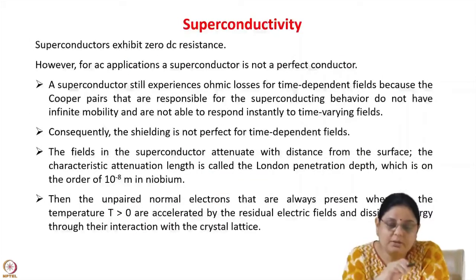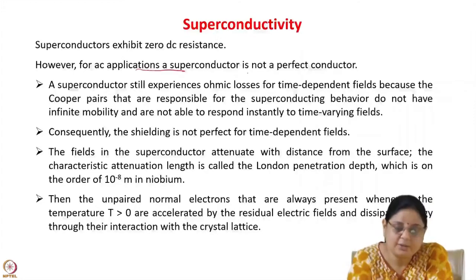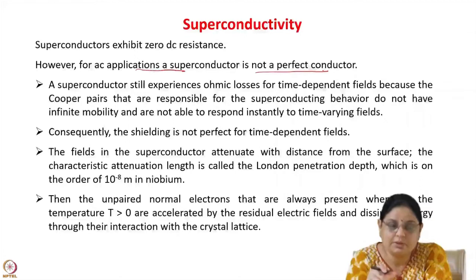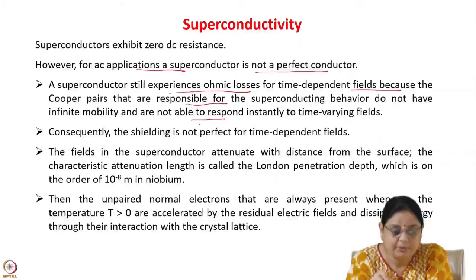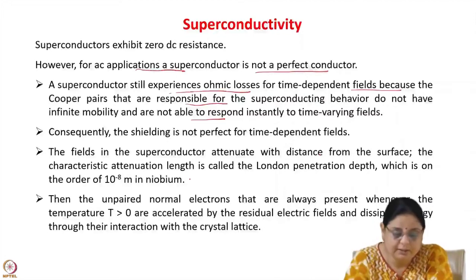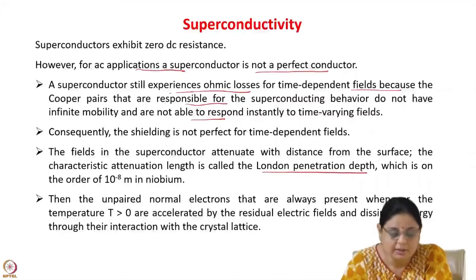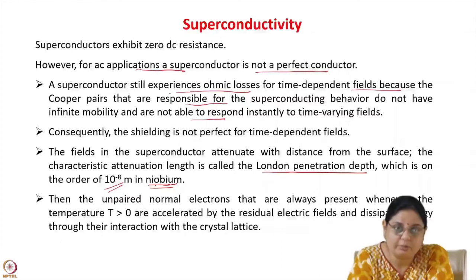Superconductors exhibit zero DC resistance. However, for time-varying fields or AC applications, a superconductor is not a perfect conductor — fields do penetrate inside the superconductor if they are time-varying. A superconductor still experiences ohmic losses for time-dependent fields because Cooper pairs do not have infinite mobility and are not able to respond instantly to time-varying fields, so shielding is not perfect for time-dependent fields.